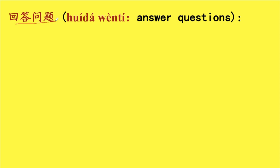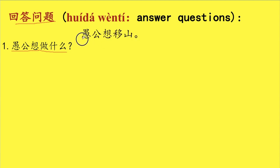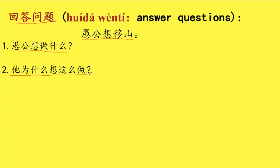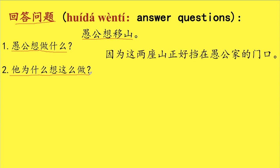好，那现在我们来回答问题。Answer a few questions. 第一个问题：愚公想做什么？对了，愚公他想移山。第二个问题：他为什么想这么做？就是他为什么想移山？对了，因为这两座山正好挡在愚公家的门口。